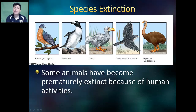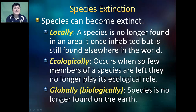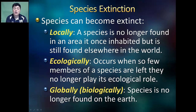Unfortunately, some animals have become prematurely extinct as a result of human activities, like the passenger pigeon or the dusky seaside sparrow. Species can go extinct in a number of different ways. They can become locally extinct, meaning no longer found in an area it once inhabited but still found elsewhere in the world. They can become ecologically extinct, when so few members remain that they can no longer play their ecological role. Finally, organisms can become globally or biologically extinct, meaning no longer found on Earth.